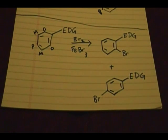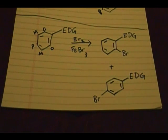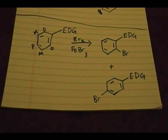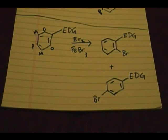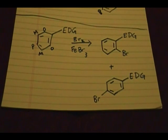In the next part I'll be discussing what happens when you have two types of groups attached to the starting material — like an electron donating group and an electron withdrawing group, or a combination of two electron donating groups. Stay tuned for part four.